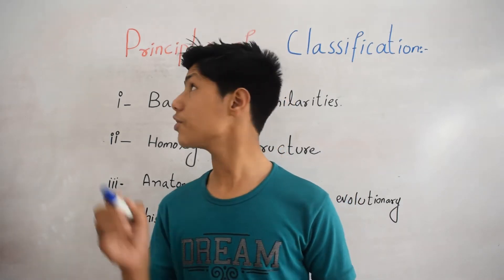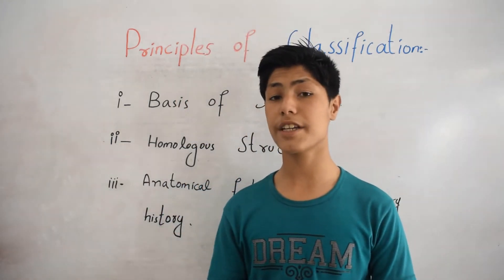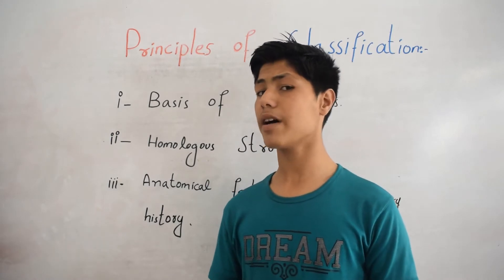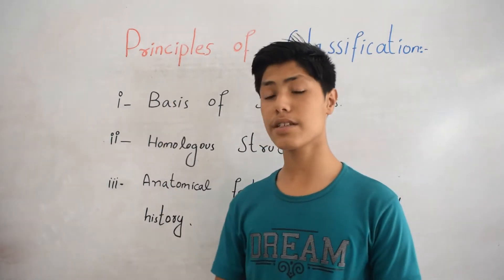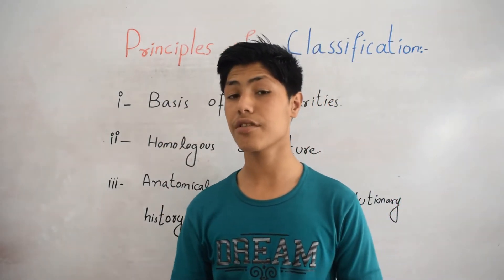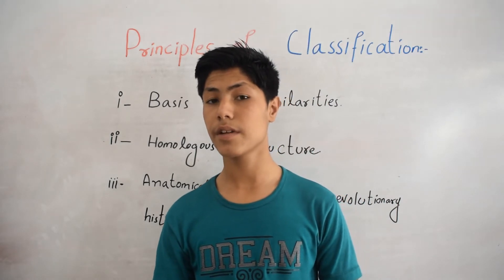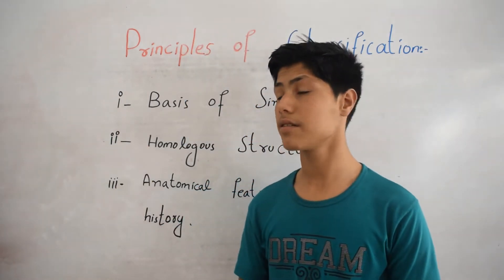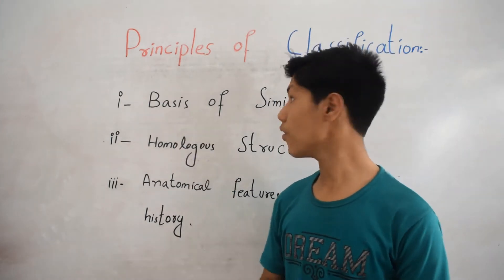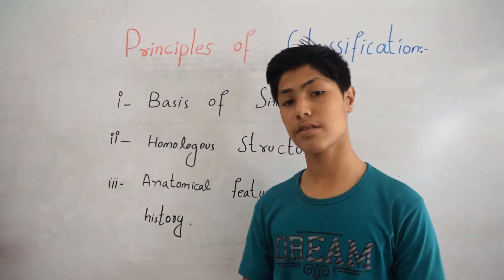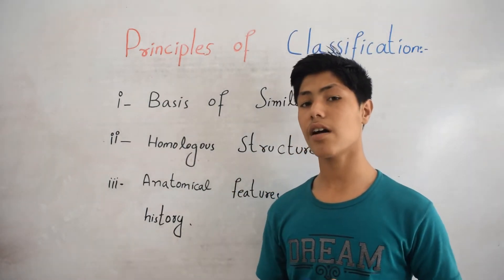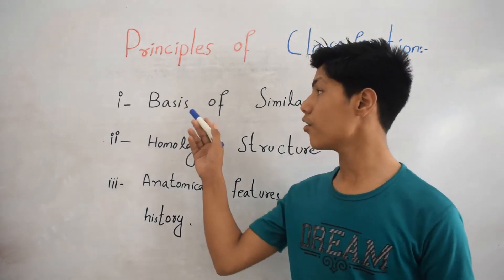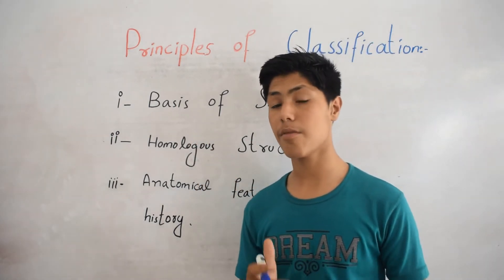Now let's come to the principles of classification. While classifying organisms, we follow certain principles. The first principle is classification on the basis of similarities. Organisms are classified on the basis of similarities among them.